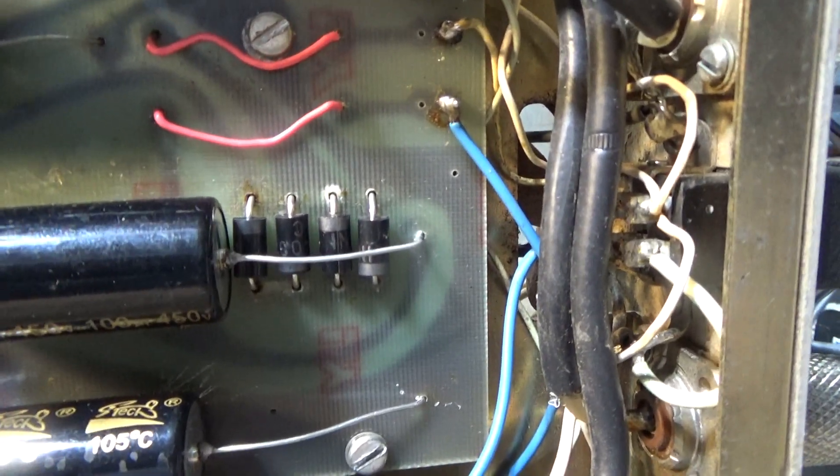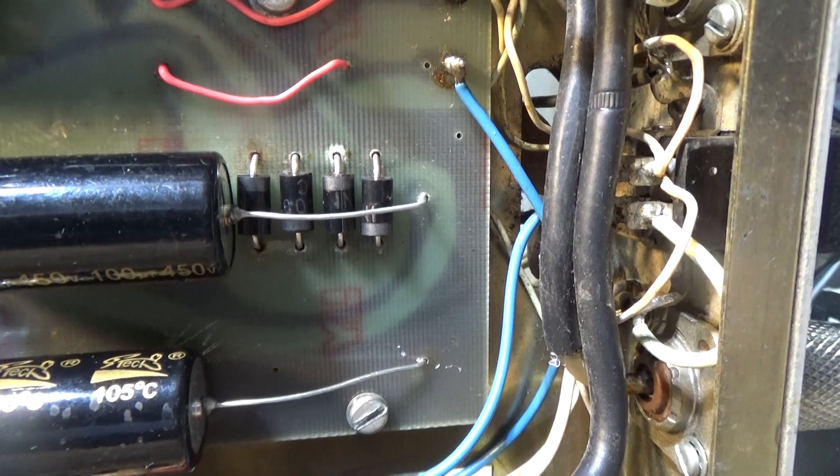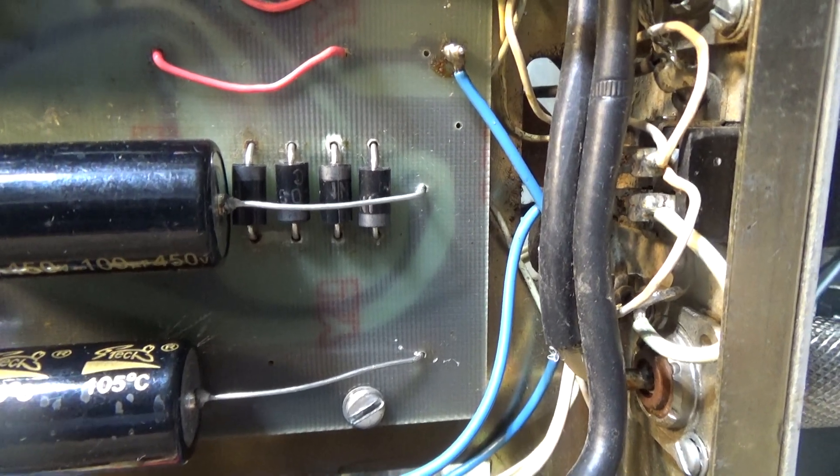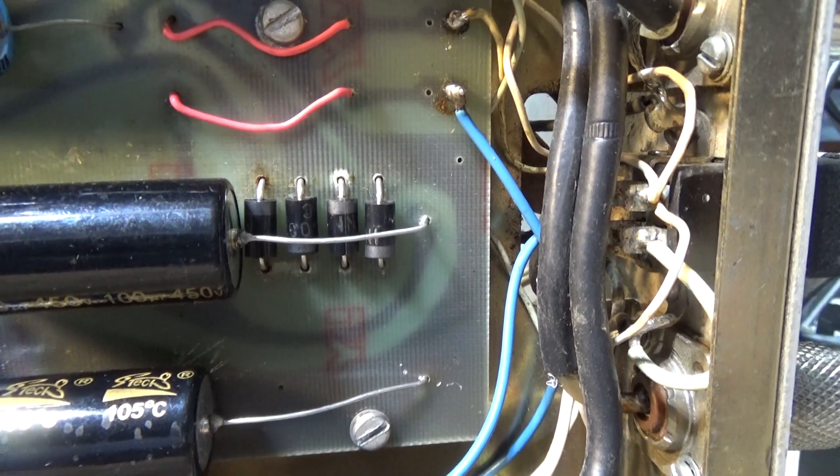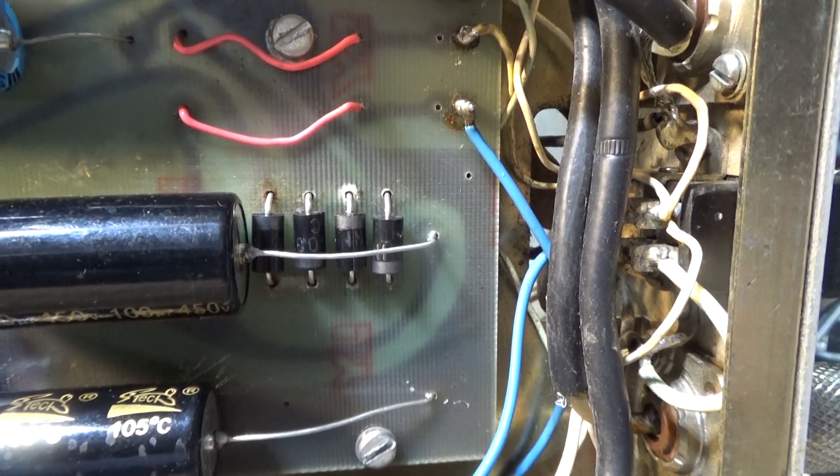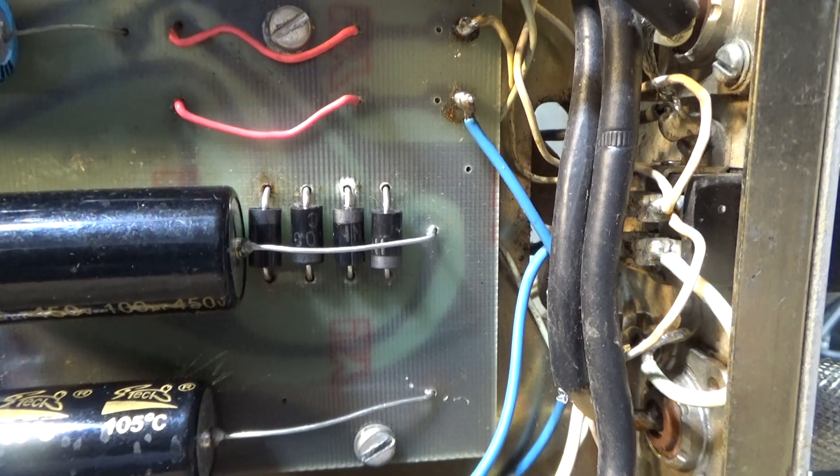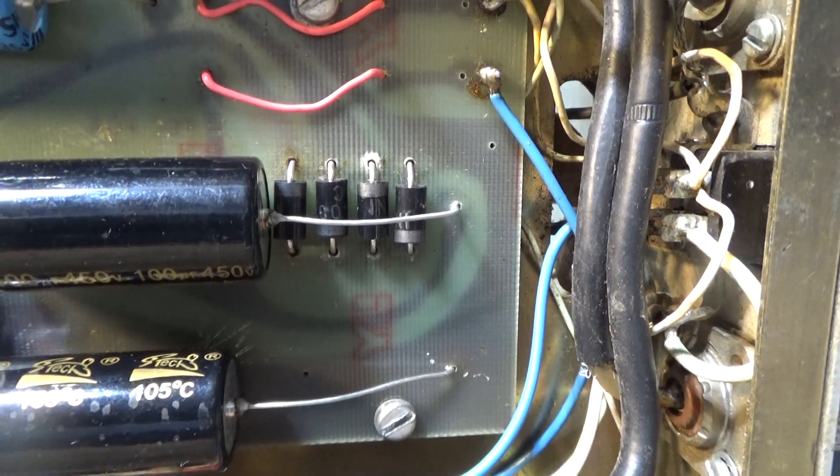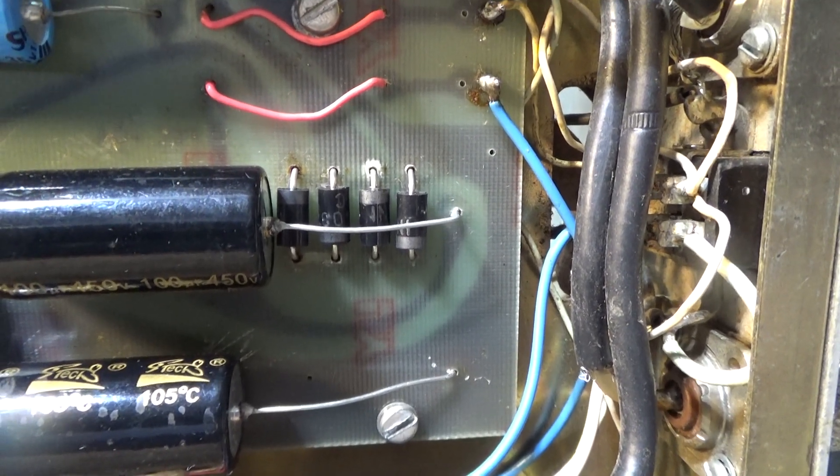Also, those four diodes there go to the voltage doubler circuit on this one. If you have the four, you need the low voltage 300 volt transformer. That's a voltage doubler.